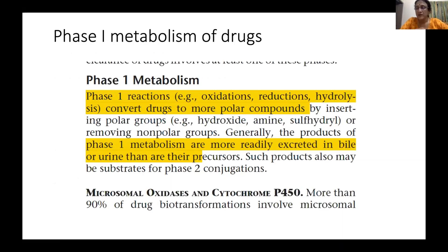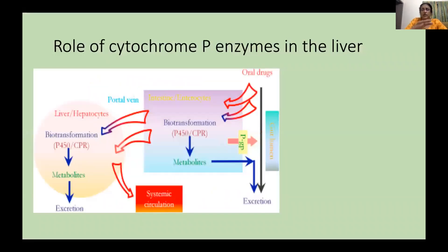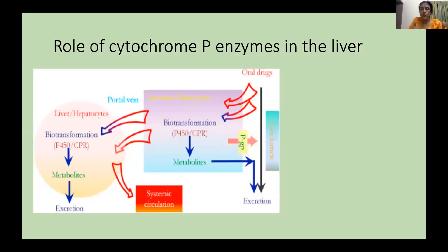Phase one involves straightforward reactions which convert drugs into more polar compounds that are hydrophilic and can be excreted in the bile or urine. It is also possible that phase one metabolism of drugs, which happens in the liver, converts them into a product that subsequently undergoes phase two conjugation. Most of these reactions are catalyzed by the famous cytochrome P enzymes, which are unique to the liver.